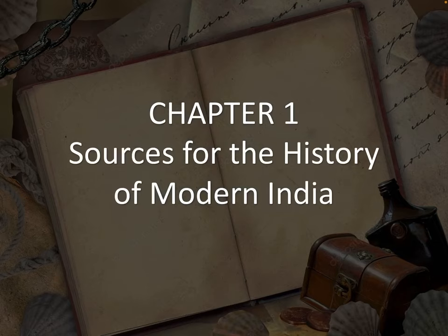We will start with Chapter 1: Sources of the Modern History of India. This chapter covers whatever the major sources are — where we have found things, what we have created, what we have assumed or known. All of these are covered in this chapter.